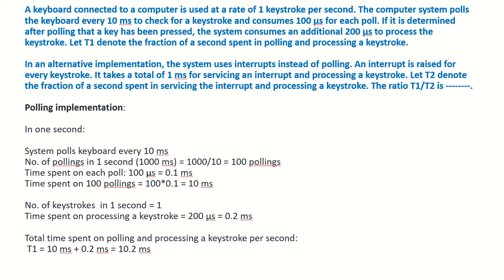A keyboard connected to a computer is used at a rate of 1 keystroke per second. The computer system polls the keyboard every 10 milliseconds to check for a keystroke and consumes 100 microseconds for each poll. If it is determined after polling that a key has been pressed, the system consumes an additional 200 microseconds to process the keystroke.